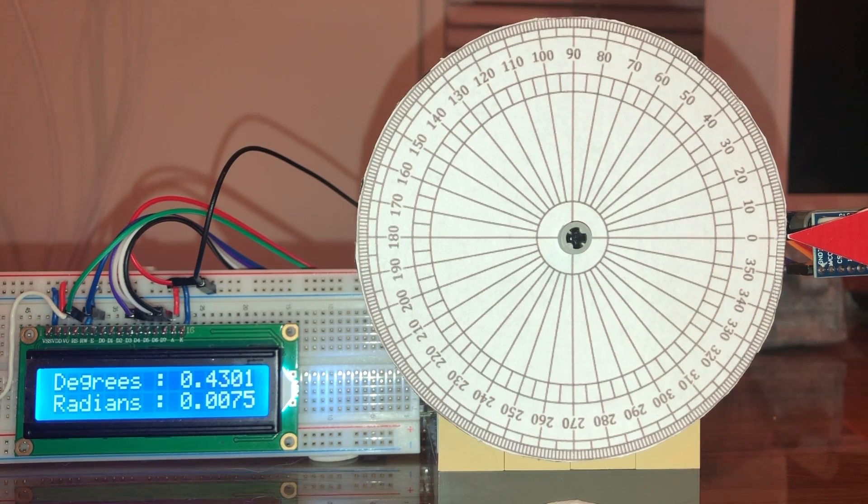Here is our setup with the ADXL345 on the right hand side of the screen just behind the red triangle. The 360 degree circle is demarked in 10 degree increments and our LCD on the left shows the degree in radians that the red marker is pointing along this 360 degree circle.